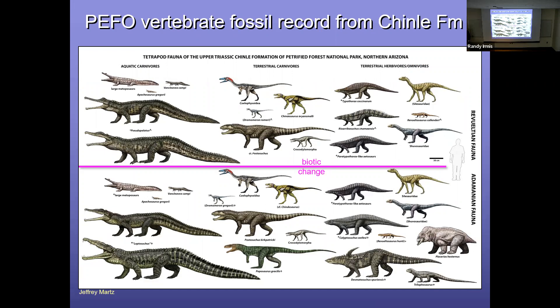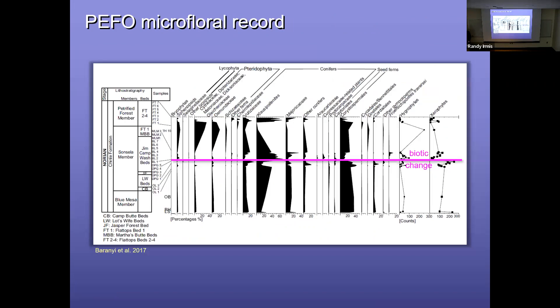And one of the things people observed first with vertebrate animals, animals with backbones, is that about midway through the formation, there was a change in the species that were present. And it looked pretty sudden, at least stratigraphically. And this change subsequently was also observed in records of plants as well. So these are pollen diagrams, but they've observed it in leaf fossils as well. So it seems like there's some things happening in the middle part of the formation where you get a change in the type of species present and the abundance of those species.